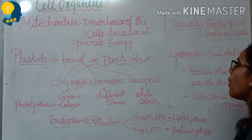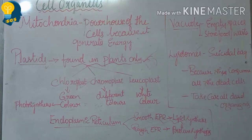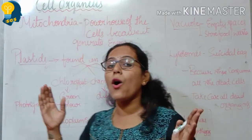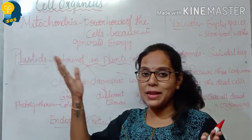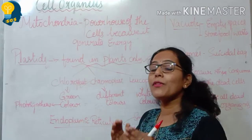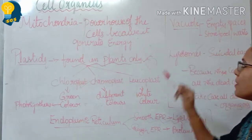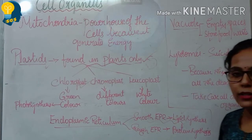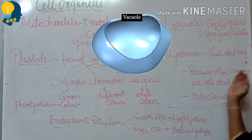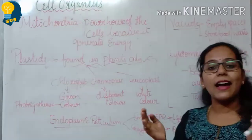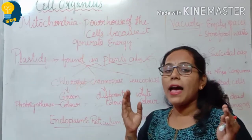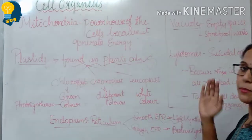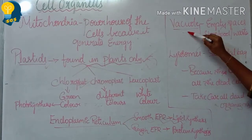Moving towards the next cell organelle — the vacuole. Vacuoles are actually empty spaces. We have also seen these empty spaces in the onion piece when viewed under the microscope. Those empty spaces are called vacuoles. Vacuoles help in storing food and also store some waste products present inside the cells.